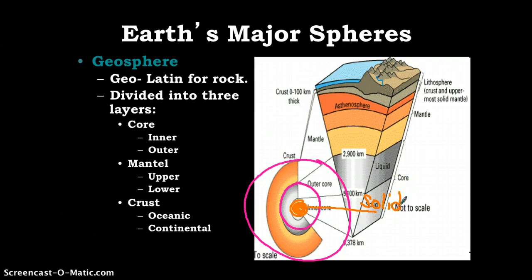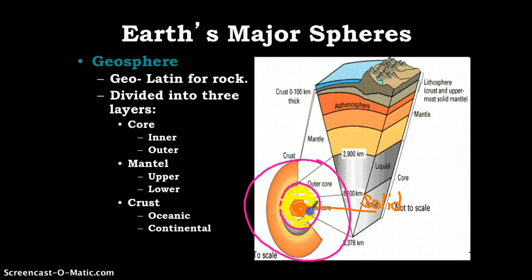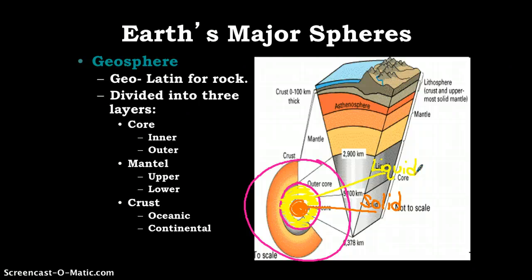We'll talk about that in a minute. The outer core is the next hottest, and it is liquid, as you would expect. So there's the core. That is broken. The mantle is broken into the upper and the lower.